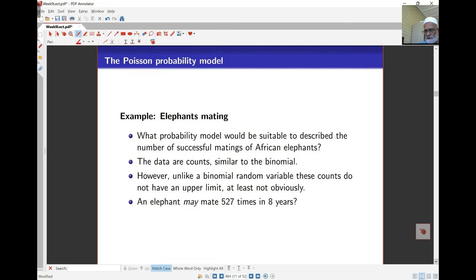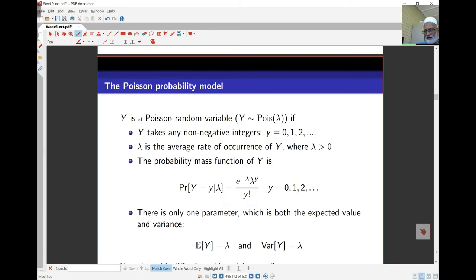And so this is count data. But not binomial, because binomial is only 0, 1 if it's binomial. Or it takes all values between 0 to the maximum, which is the number of trials. In this case, we don't have a number of trials. And in this case also, theoretically, the number of matings can keep going on forever. So this is count data, which we model as a Poisson distribution.